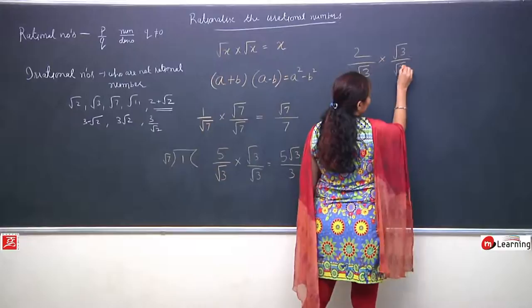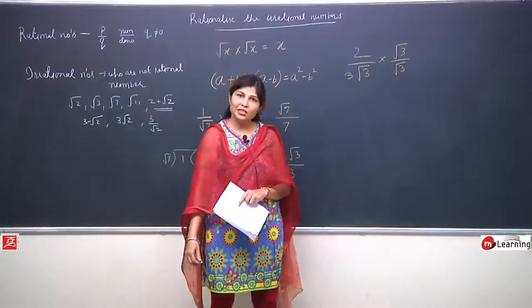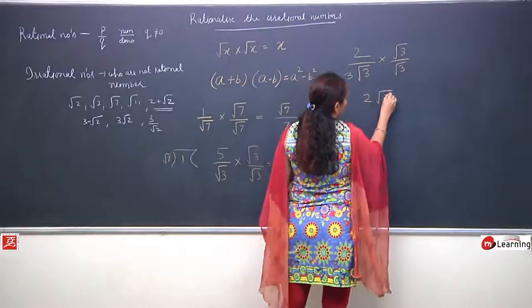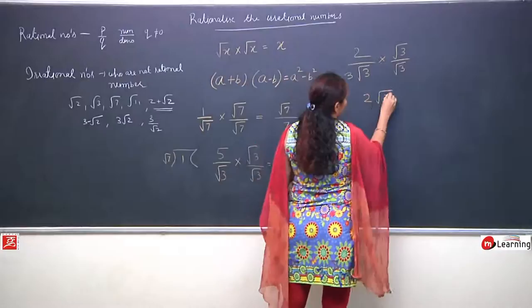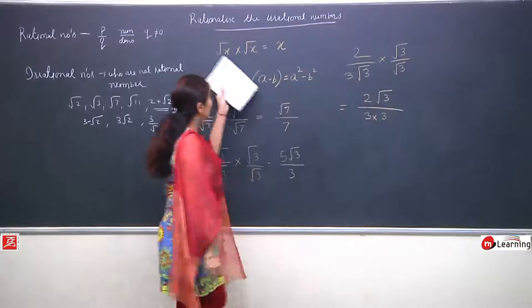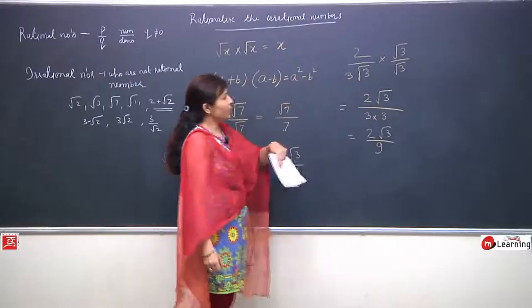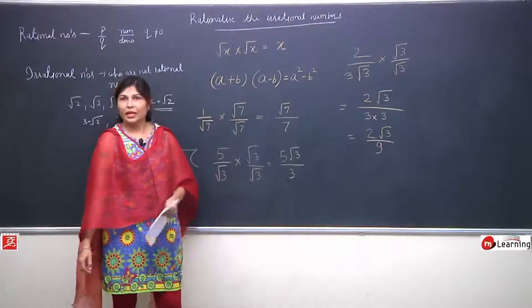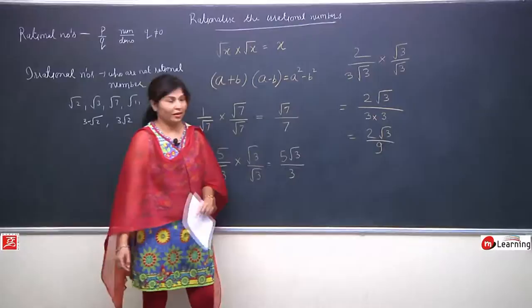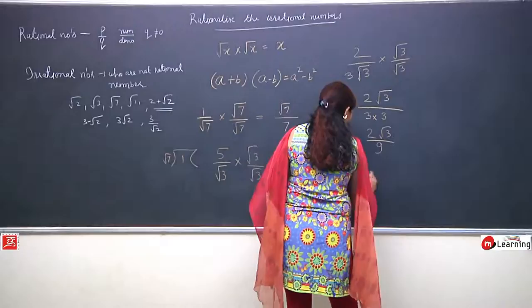What is the irrational part here? Root 3. We will try to remove it. Same procedure: multiply numerator by root 3 and multiply denominator by root 3. After doing this, the numerator becomes 2 root 3 and the denominator becomes 3, because root 3 multiplied by root 3 becomes 3 by the property root x into root x. So the answer is 2 root 3 upon 9. After rationalization, the irrational part from the denominator is removed and it has become rational.